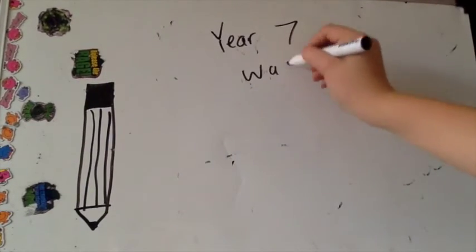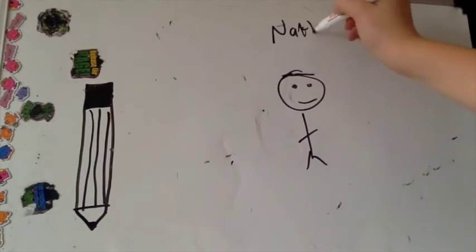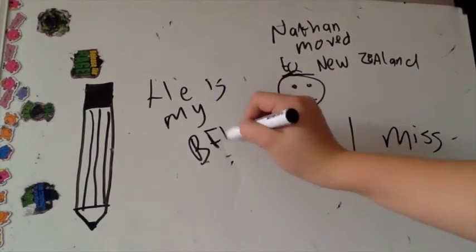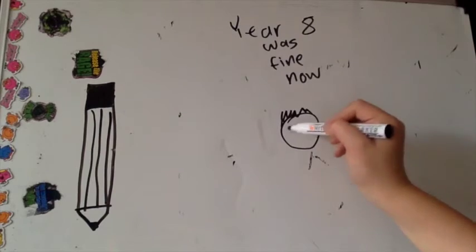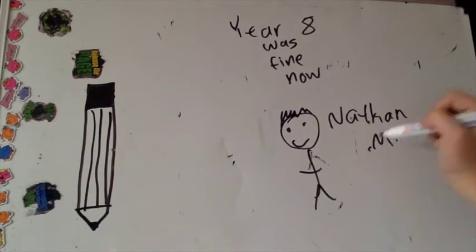Year seven was fun because I get to learn all new things, but the bad news is Nathan P has to leave to another school and I miss him, he is my best friend forever, but I'll see him again sometime. Year eight was fine now because I met another new friend named Nathan M and he's a really cool guy.